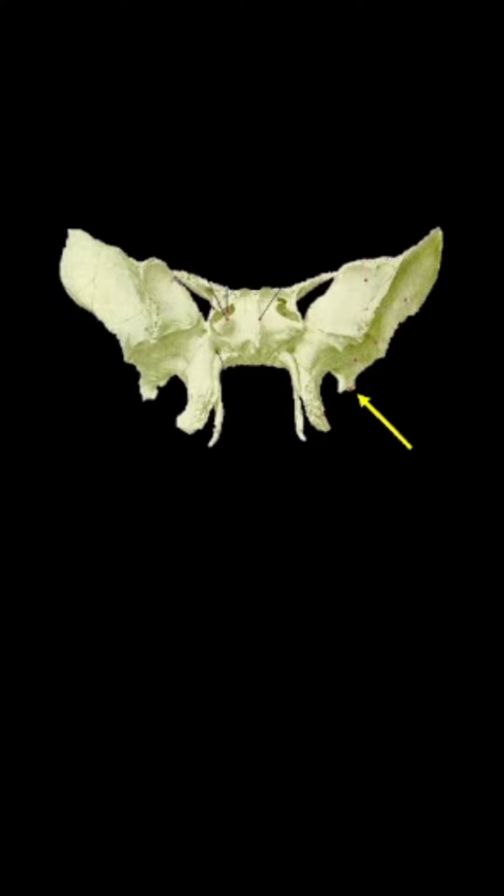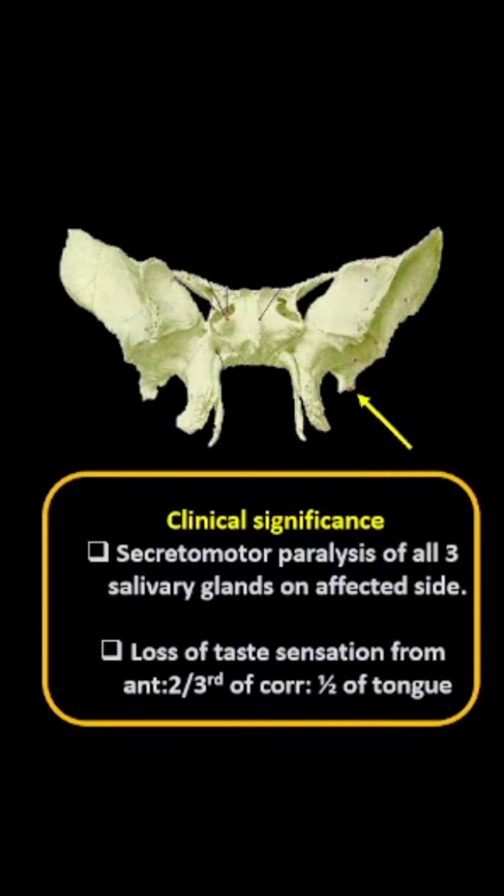Now what is the clinical significance of these relations? The secretomotor supply to the parotid gland is via the auriculotemporal nerve. And to the submandibular and sublingual salivary glands are via the chorda tympani nerve. So if there is any fracture or necrosis of the spine of sphenoid, the secretomotor supply to all these three salivary glands will be affected.